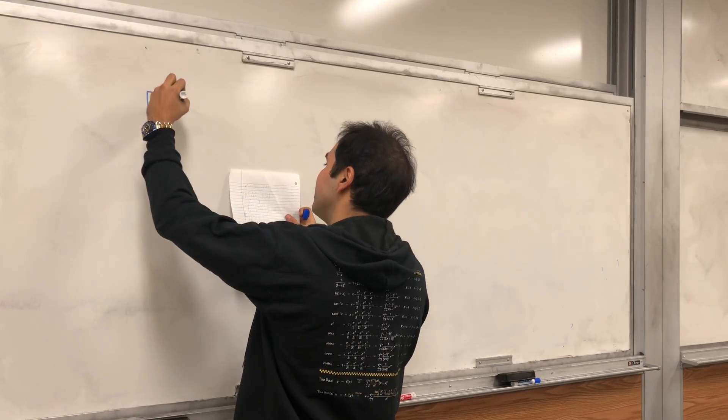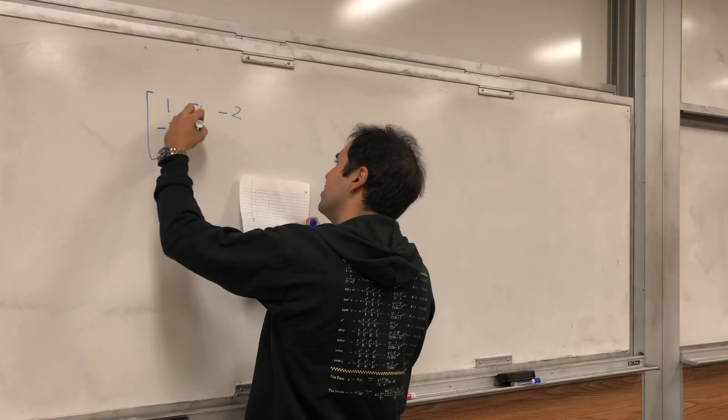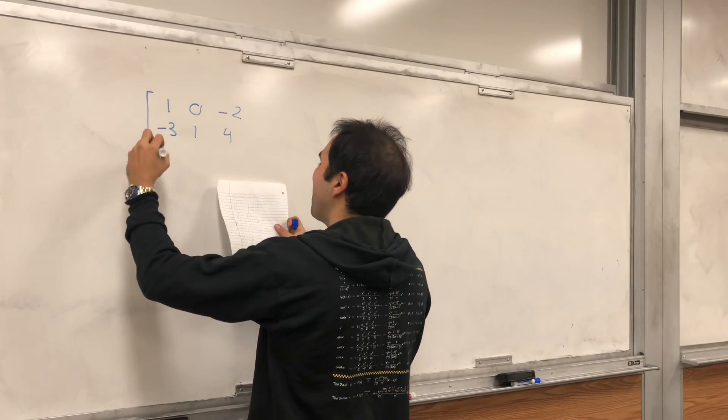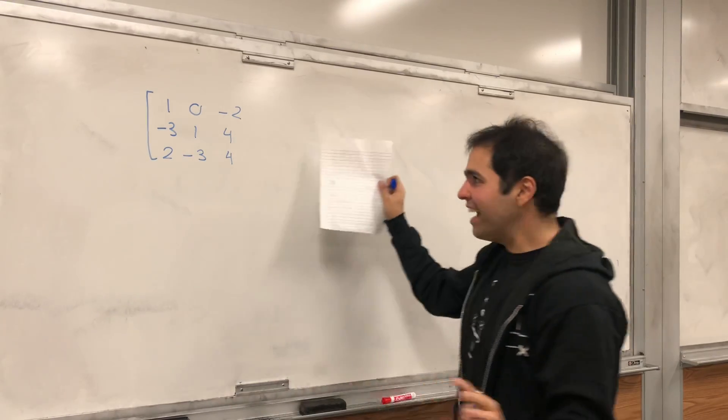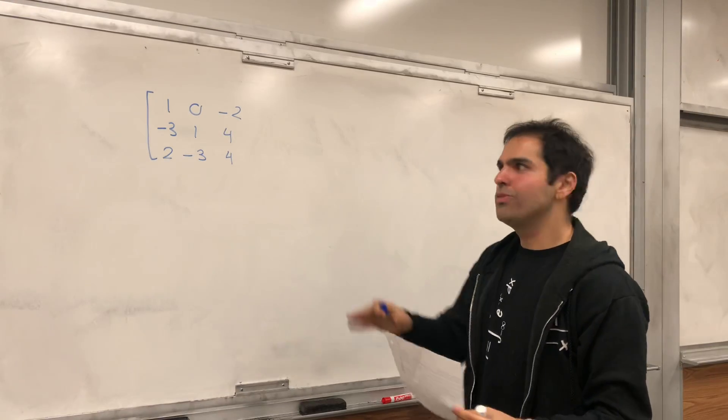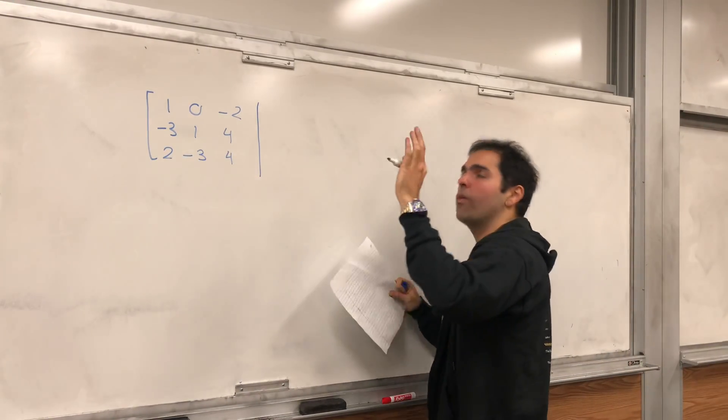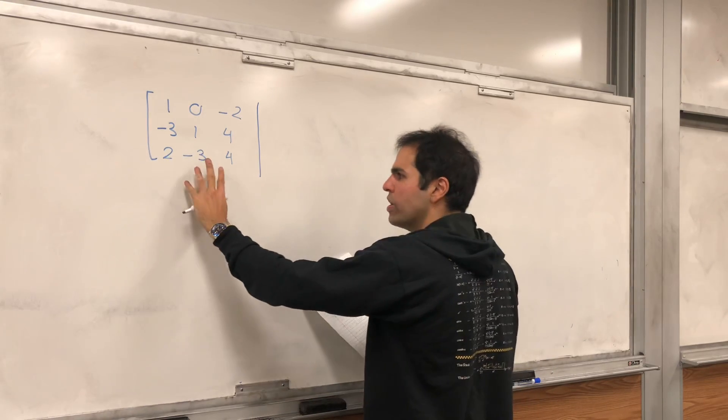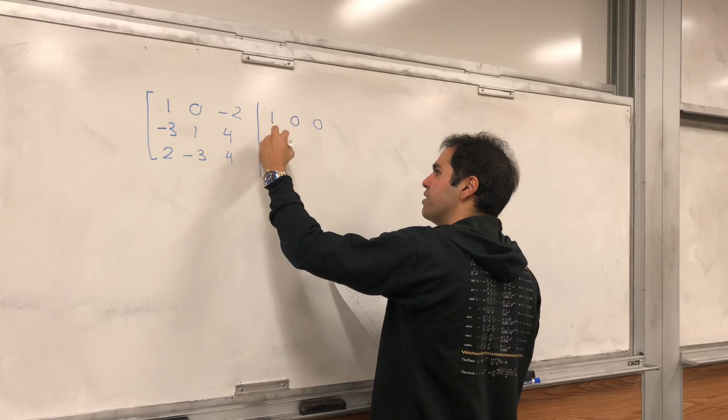In particular, let's find the inverse of 1, 0, minus 2, minus 3, 1, 4, almost pi, and 2, minus 3, 4. So find the inverse of this matrix, and the reason I put it in this way is because we need to complete it. And so it turns out what you do, you form a giant matrix, where here is your matrix A, and this is an identity matrix.